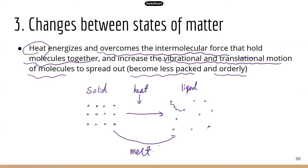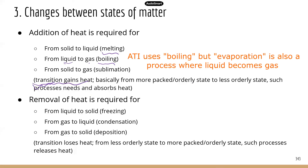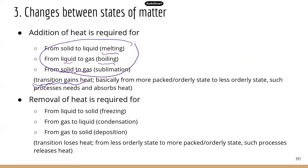When molecules spread out and become less tightly packed and orderly, that will be liquid. If you provide a lot of heat, the substance may become gas — even less packed and orderly. So when transitioning from solid to liquid or gas, heat is gained. Solid to liquid is called melting; liquid to gas is boiling; solid to gas directly is sublimation. All these transitions gain heat — they need heat to overcome the intermolecular force and make molecules go farther apart.